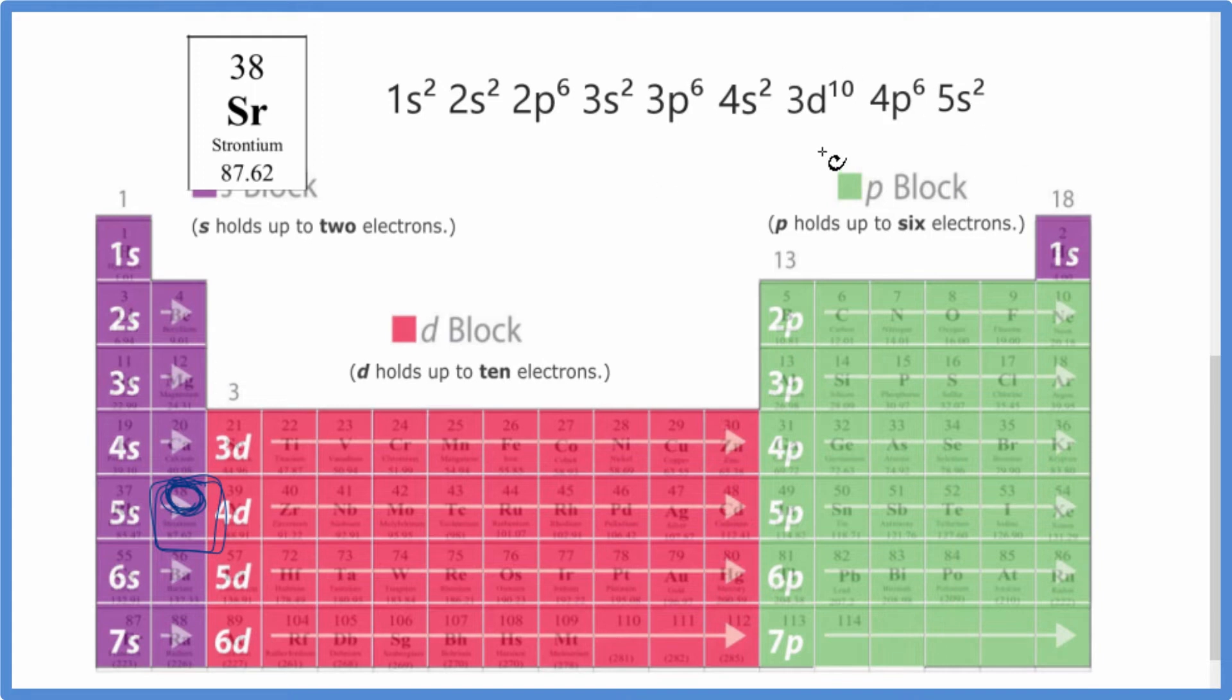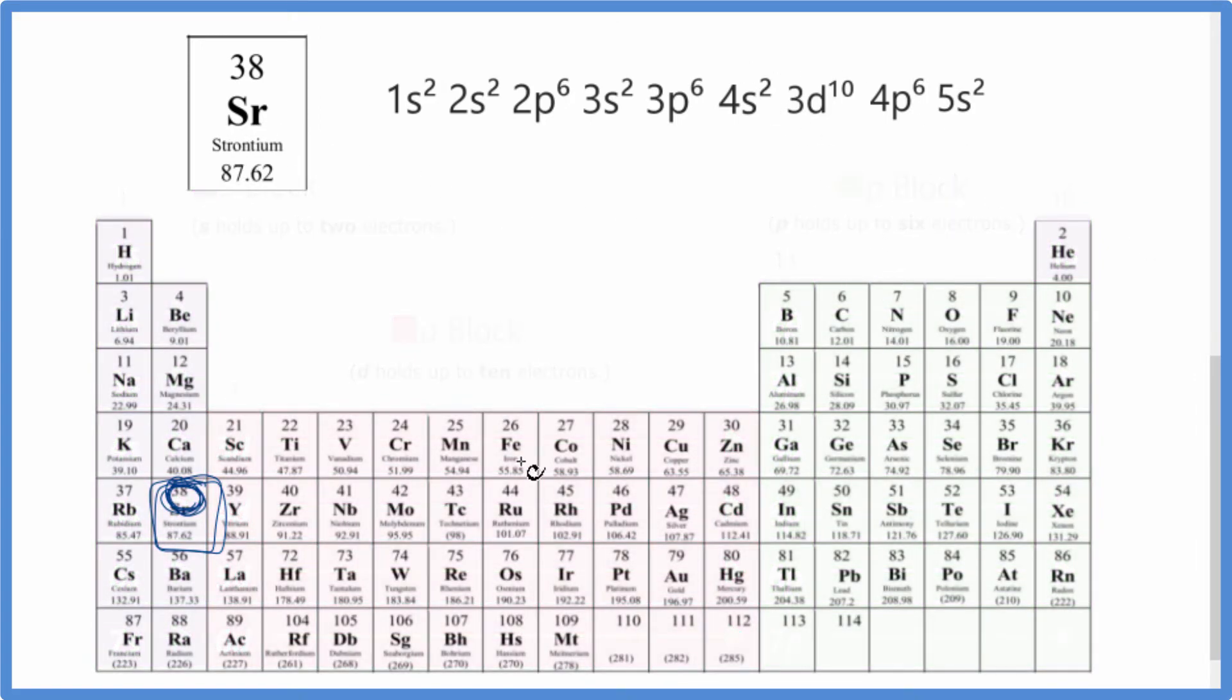So now let's write the condensed notation, and then we'll figure out the electron configuration for Sr2+. So to write the condensed notation, we go to the element before the strontium. So here's 36, this is the krypton, then we go to 37, 38.